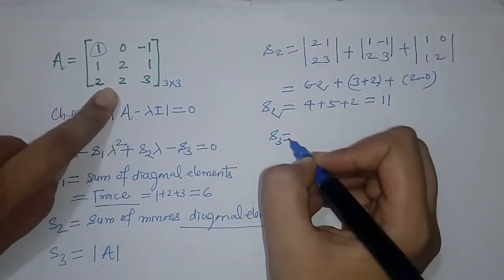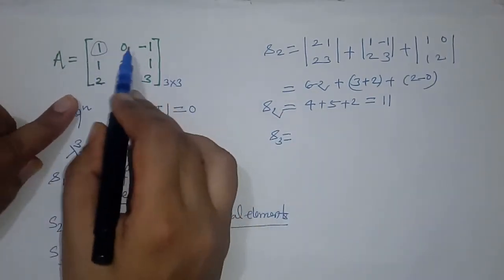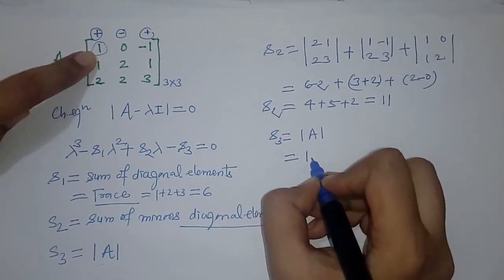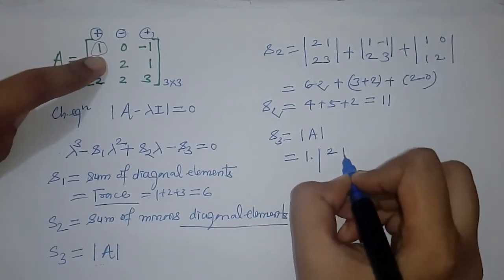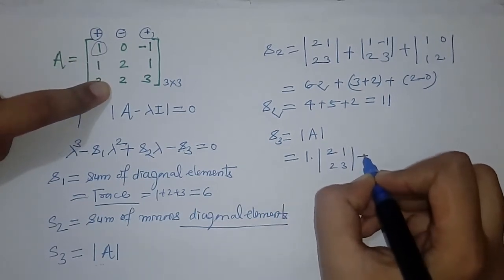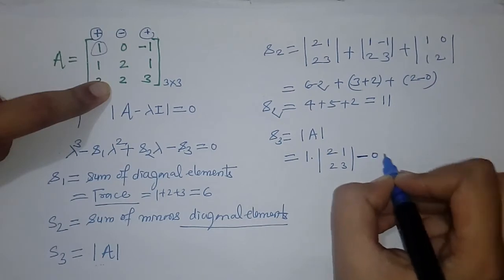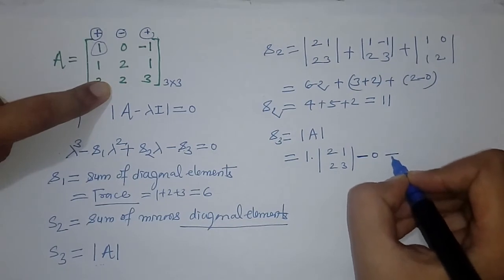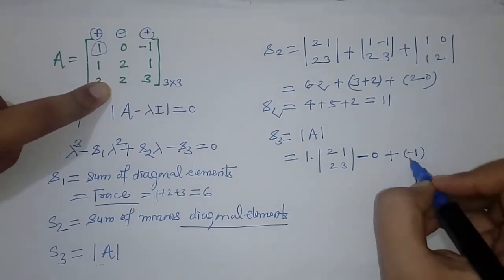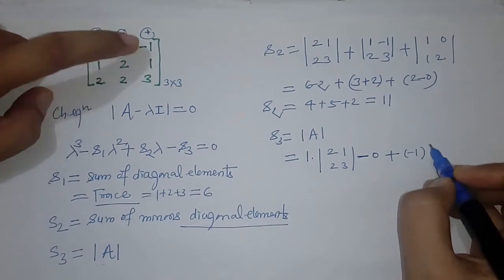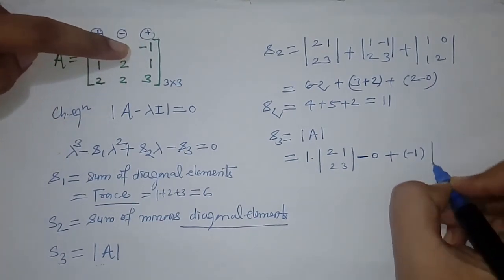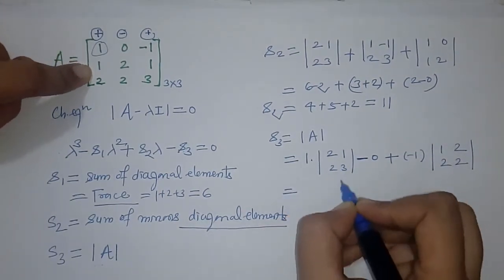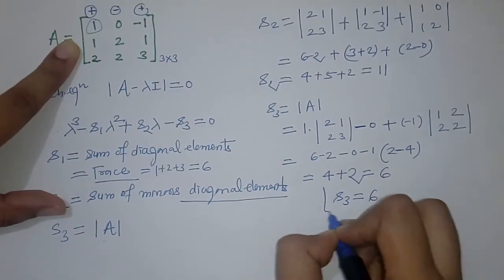For S3, we compute the determinant of matrix A by expanding along the first row. After simplification, S3 equals 6.